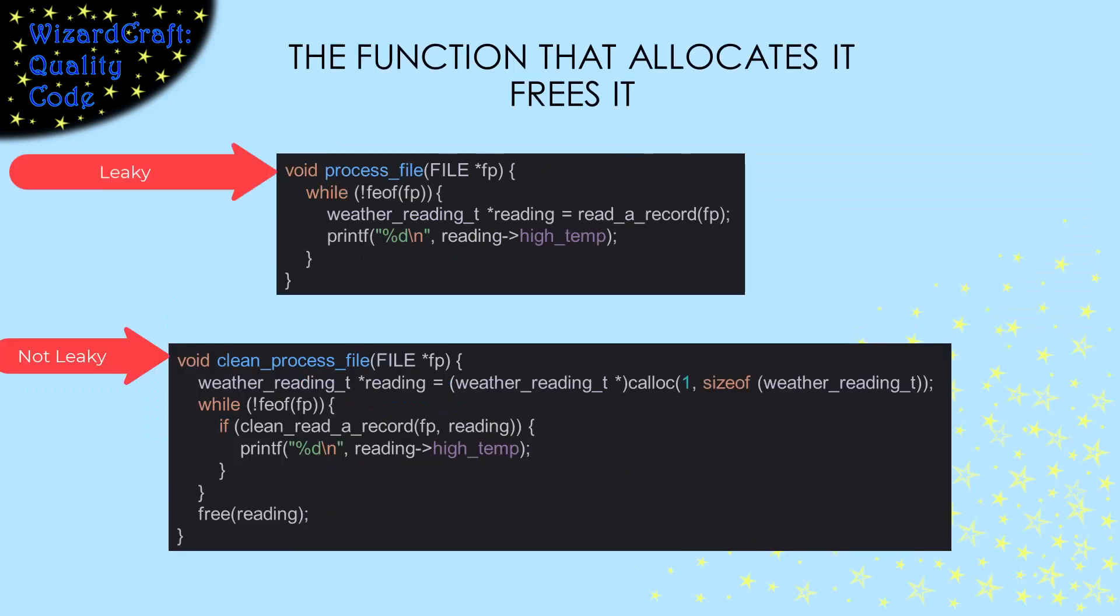One way to prevent memory leaks like that one is to follow the adage: the function that allocates it frees it. That means that the call that does the allocation should be the same function where we do the free.